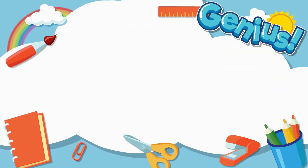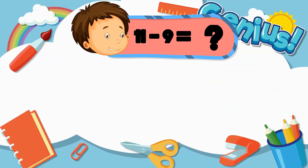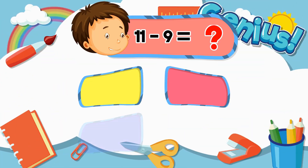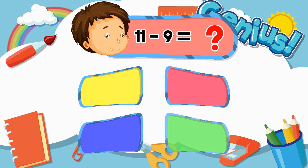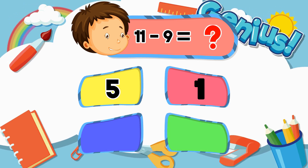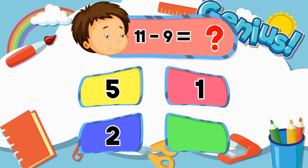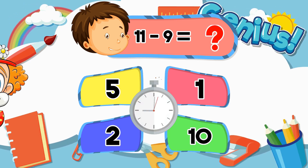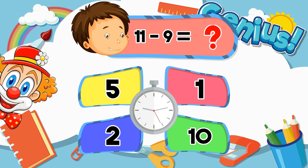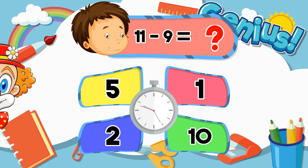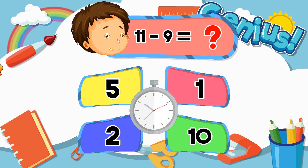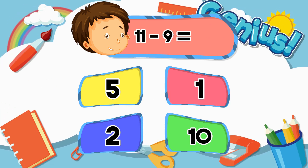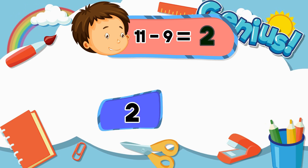What is 11 minus 9? Options: 5, 1, 2, 10. Answer: 2.